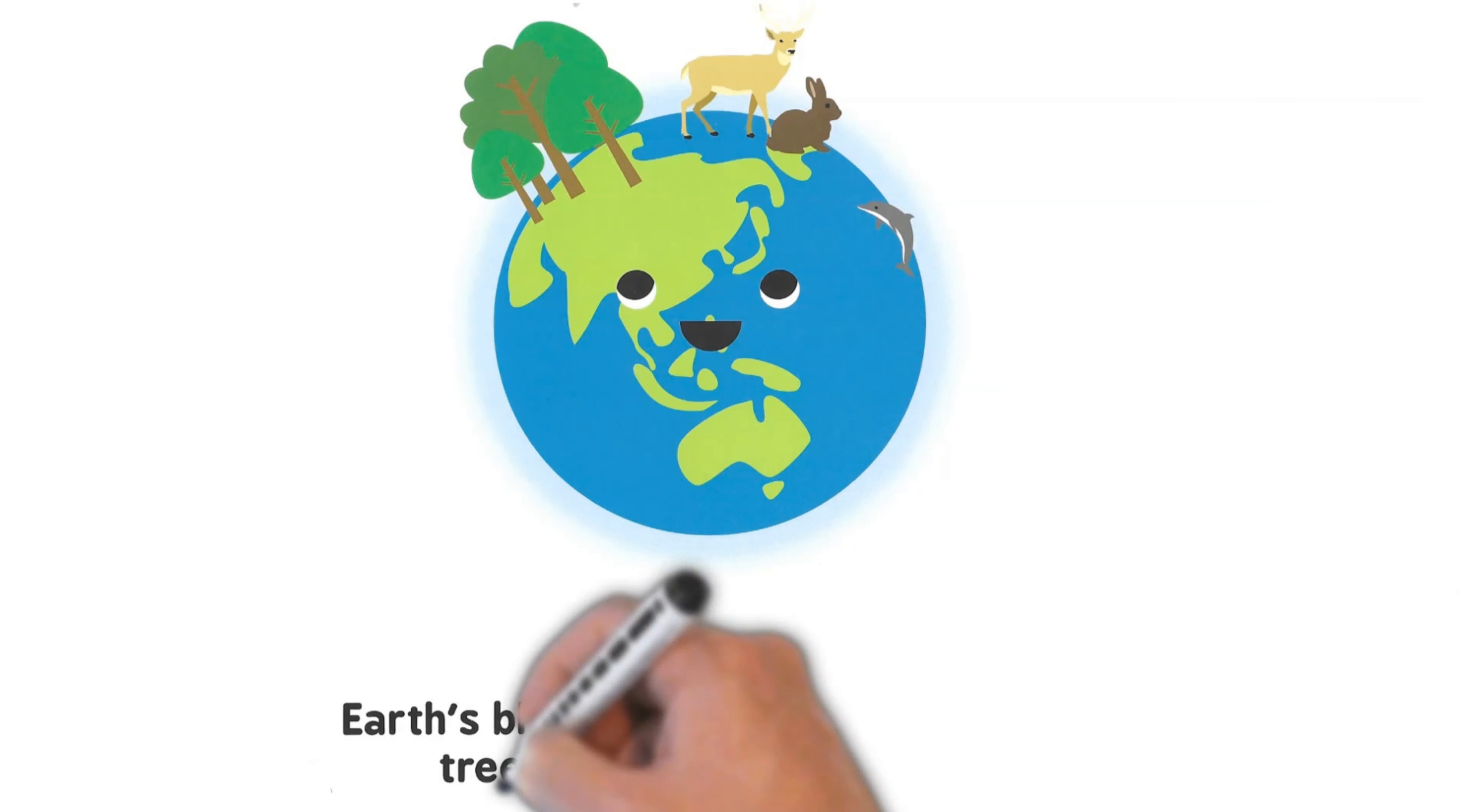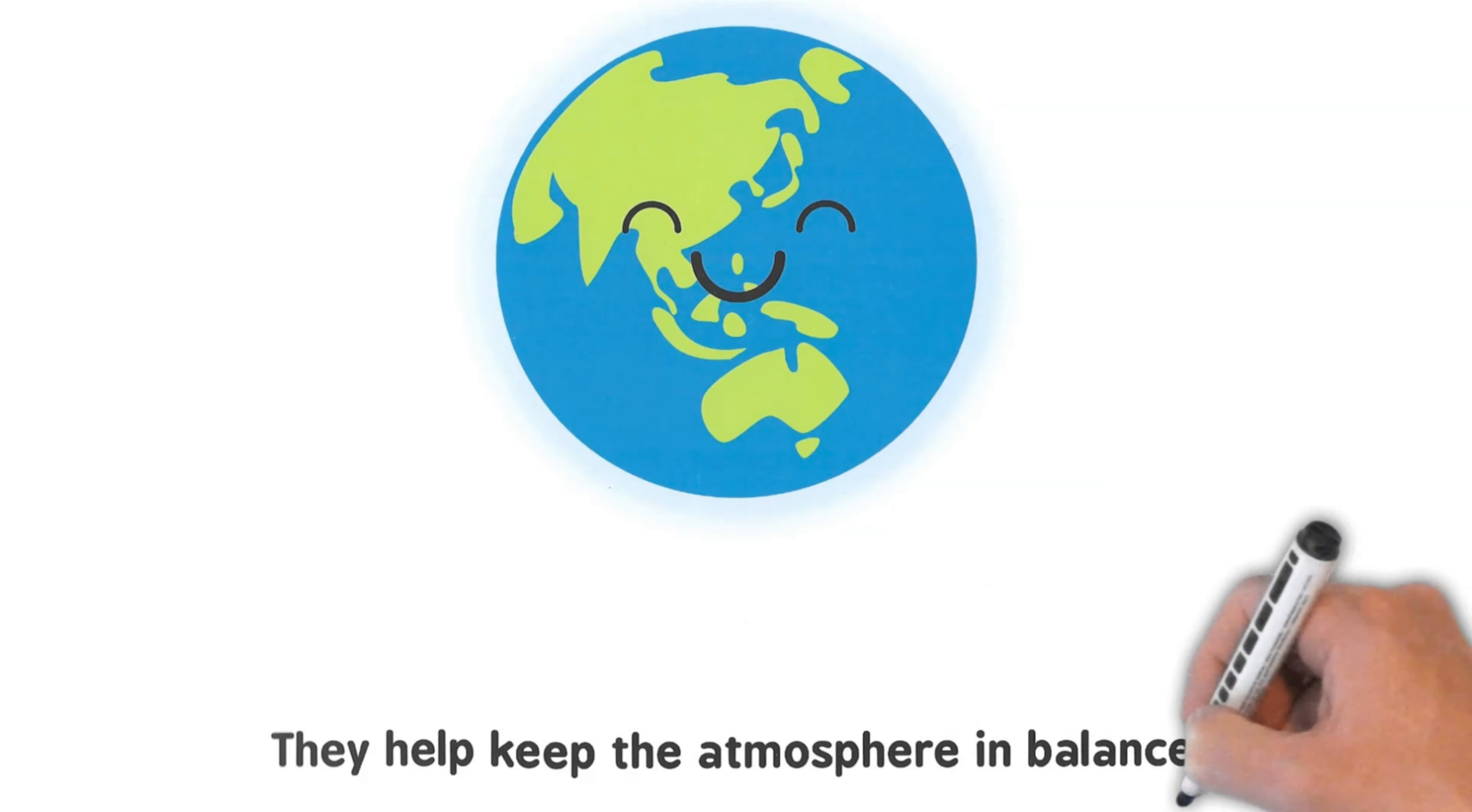Earth's blanket is just right, thanks to trees, animals, and oceans. They help keep the atmosphere in balance.